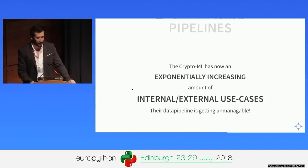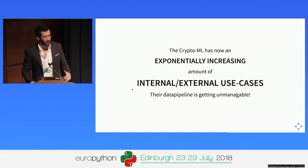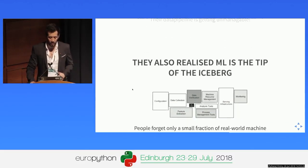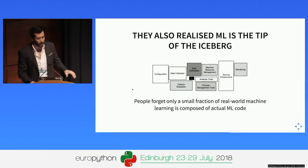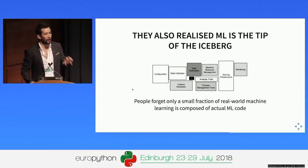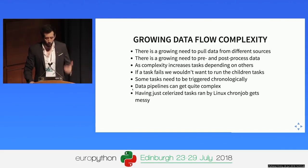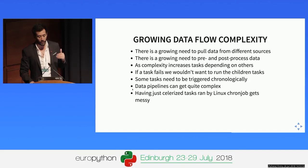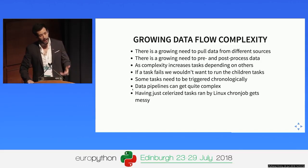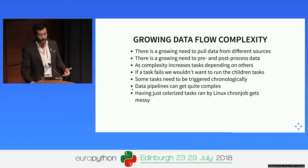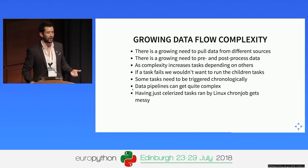The CryptoML team now has an exponentially increasing amount of internal and external use cases. Their data pipeline is getting unmanageable. They also realize that the machine learning pipeline itself is just the tip of the iceberg — it's not the only thing required in terms of data ETL in production. There's a growing need to pull data from different sources, to pre-process and post-process data even beyond the ML pipeline. As complexity increases, task dependency increases as well — if a task fails, you wouldn't want to execute the next one. Some tasks need to be triggered chronologically. Having just Celery-ized tasks run by Linux cron jobs gets really, really messy.